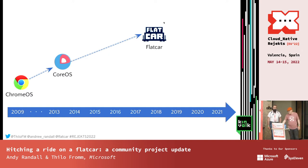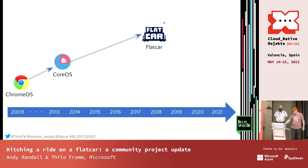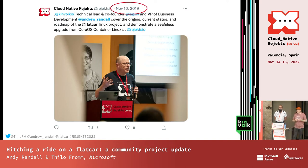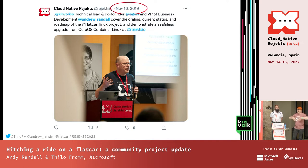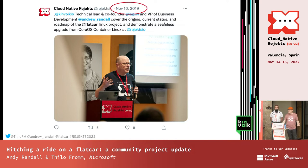We actually decided to launch the Flatcar project as effectively a fork of CoreOS back in 2018, when the company behind CoreOS was acquired by Red Hat. And shortly after that, in 2019, I spoke at the last big in-person KubeCon Rejects event in San Diego and talked about Flatcar, really kind of introduced it to the Cloud Native community. That was one reason why we thought today would be a good day to come back and give you some updates on where the project's been and where it's going — because that was, believe it or not, two and a half years ago.